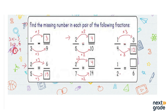Finally, we have 1 over 2, and the denominator has been multiplied by 3 to give 6, so we multiply the numerator 1 by 3 as well, giving 3. The equivalent fraction is 3 over 6. These are some examples of how you might get questions on equivalent fractions. See you in the next video with a new topic.